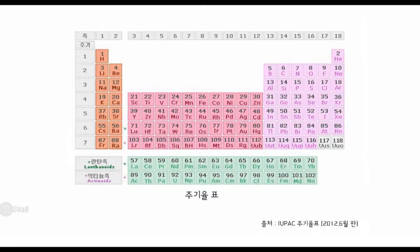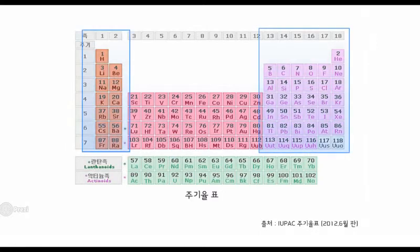중성 상태의 원자들은 최외각 전자수에 따라 주기적으로 특징을 띠게 되었고 이를 정리한 표가 바로 주기율표입니다. 이 표에서 화원에서 다루는 원소들은 1족, 2족, 그리고 13족부터 18족입니다.